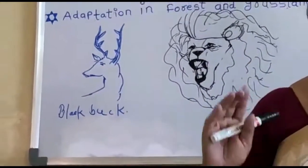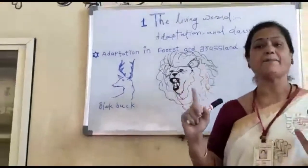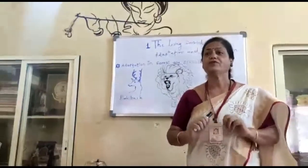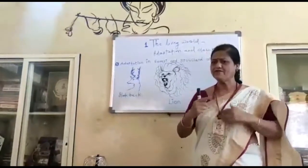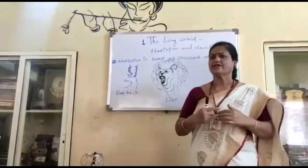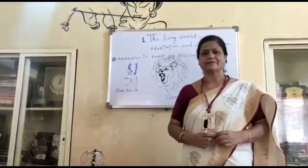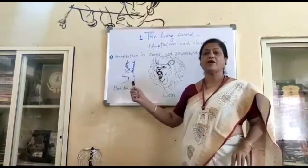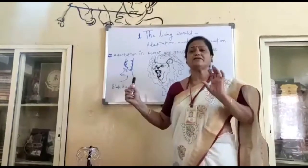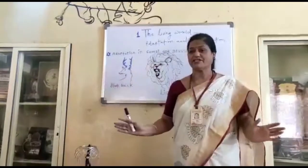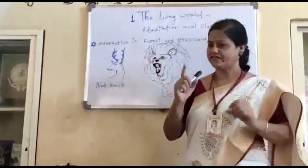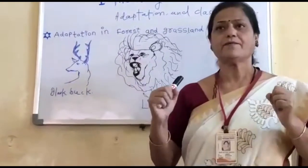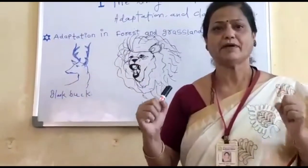Their legs are long and tapering with strong hooves, which enables them to run fast taking long strides. Deer and blackbucks have colors that merge with their surroundings. Their teeth are strong for chewing tough plant materials.